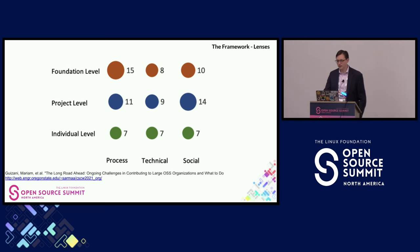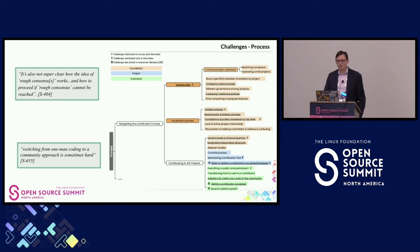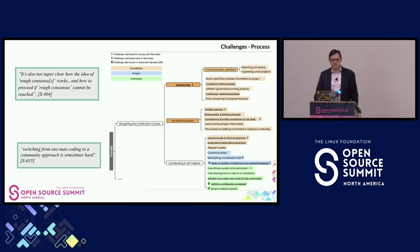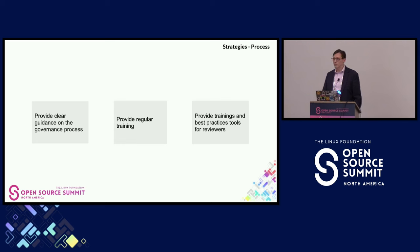Here are some examples. One process challenge is that it's not super clear how rough consensus works at the Apache Software Foundation, and how to proceed if it cannot be reached. Another is that switching from solo coding to a community approach is hard — it's a different skill set. To address process barriers, three recommendations came out of this research: provide clear guidance on the governance process, help people understand what the process is, provide regular training, and provide best practice tools for reviewers.